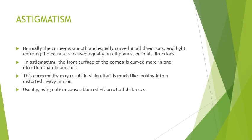Normally, the cornea is smooth and equally curved in all directions, and light entering the cornea is focused equally on all planes and in all directions. In astigmatism, the front surface of the cornea is curved more in one direction than in another. This abnormality may result in vision that is much like looking into a distorted, wavy mirror. Usually astigmatism causes blurred vision at all distances.